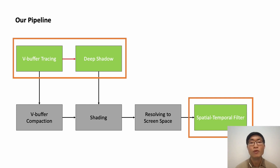And this is our pipeline. Instead of rasterization, we use ray tracing to compute the VBuffer. In addition, we developed a new method to improve the efficiency of Deep Opacity Map by using the results of primary ray tracing. Finally, we use a spatial-temporal filter to deliver final results with high visual quality.